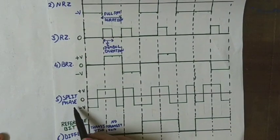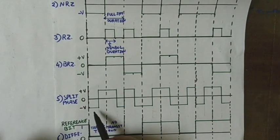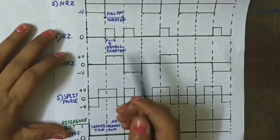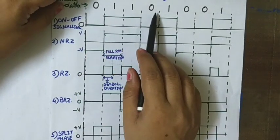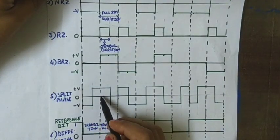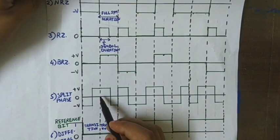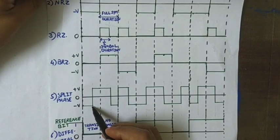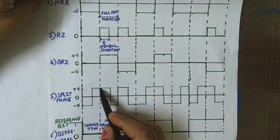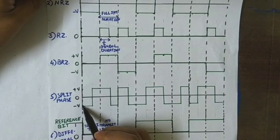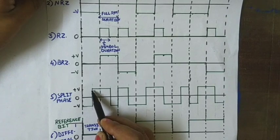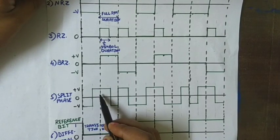The fifth one is the split phase or Manchester code. The data was 0 1 1 0 1 0 0 0 1. The first bit is zero, and for zero the pulse is a negative pulse of half symbol width followed by a positive pulse of half symbol width — that is, minus V for half symbol width followed by plus V for half symbol width.